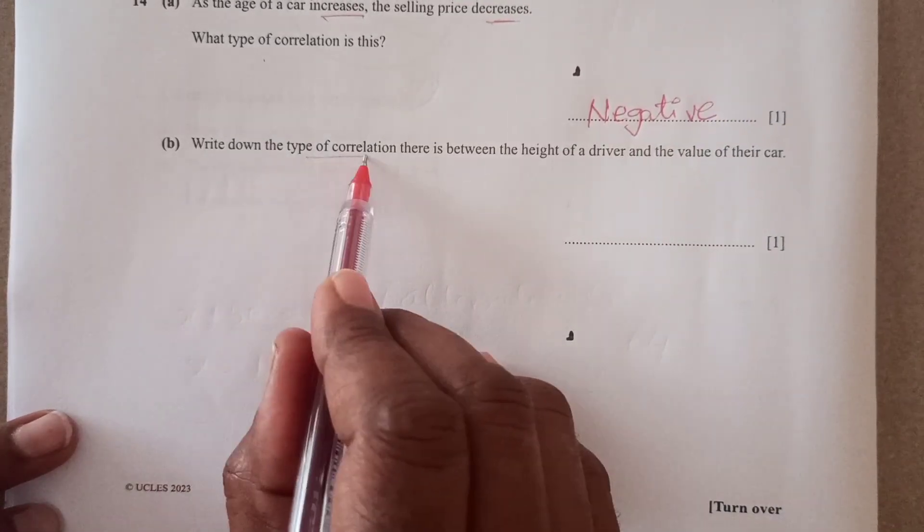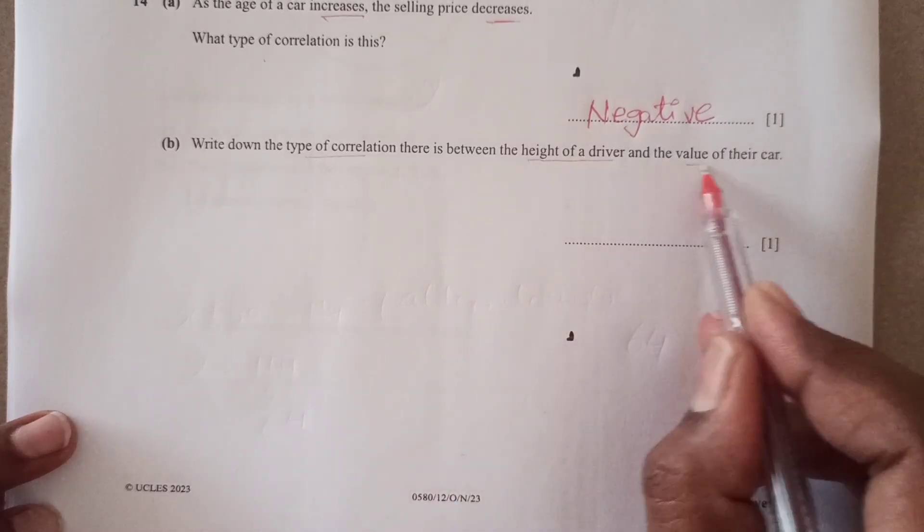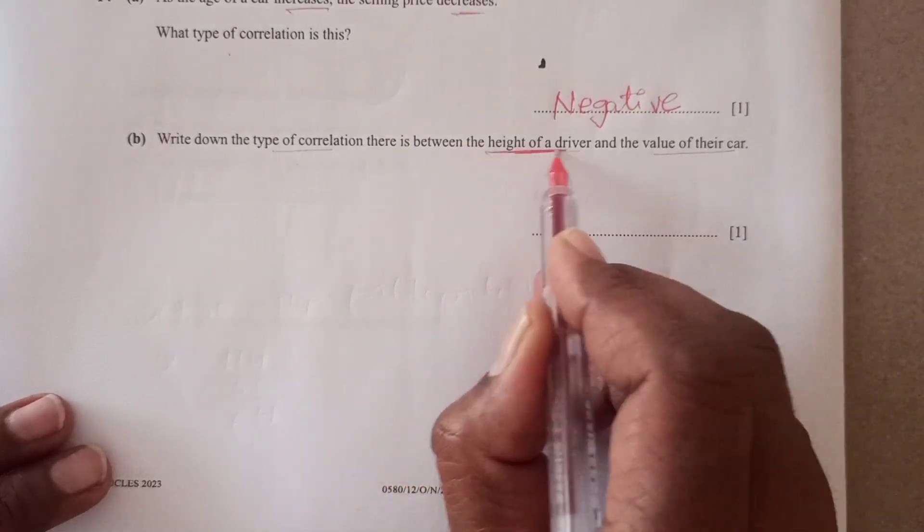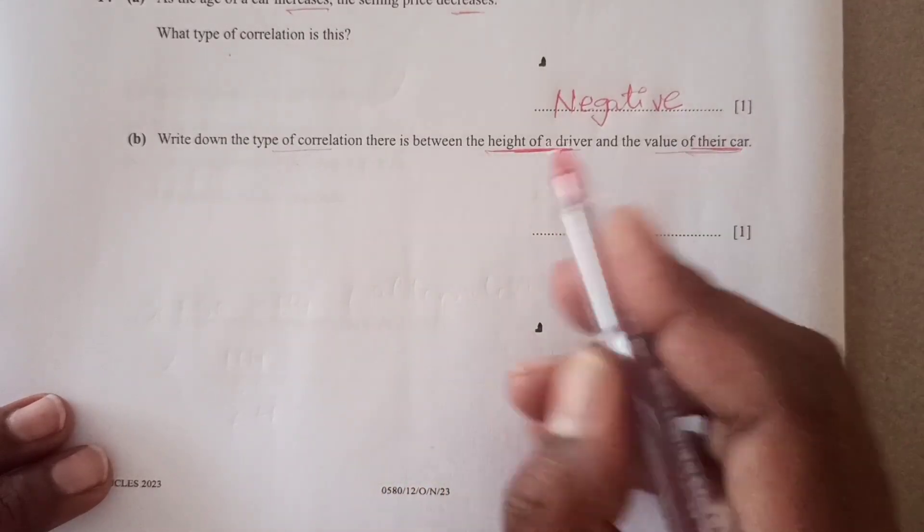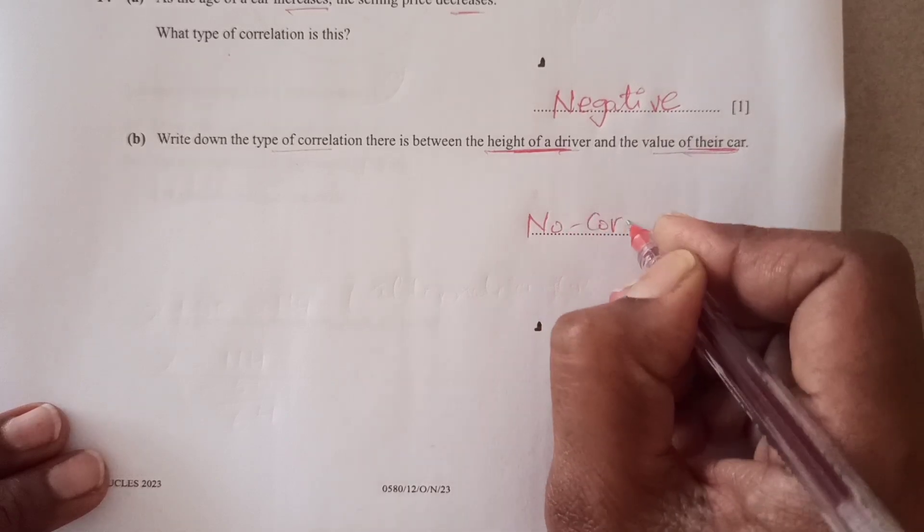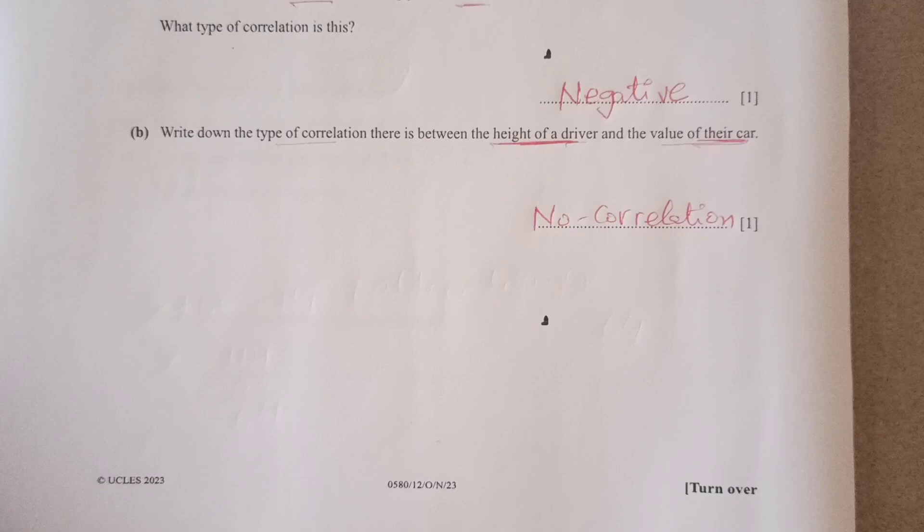Write down the type of correlation there is between height of a driver and value of the car. So you see, this is so like illogical. There is nothing to do with height of driver and the car. So we are saying no correlation. So you see these kind of questions, they just give you kind of free marks.